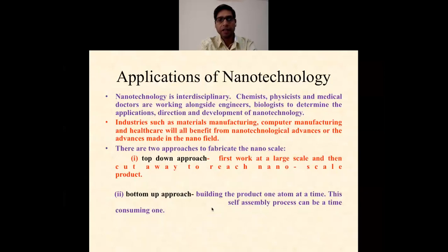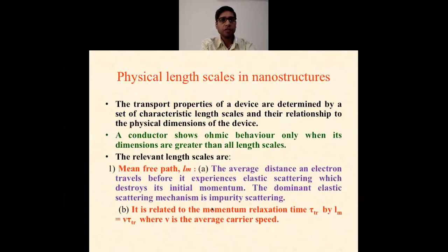Now, physical length scales. The transport properties of a device are determined by a set of characteristic lengths and their relationship to the physical dimensions of the device. These are the length scales below which the material shows nano behavior. A conductor shows ohmic behavior when its dimensions are greater than all length scales. There are four length scales. Number one: mean free path, basically the average distance an electron travels before it experiences elastic scattering, which destroys its initial momentum. The dominant elastic scattering mechanism is impurity scattering. It is related to the momentum relaxation time tau_tr by l_m equals v_f tau_tr, where v_f is the average carrier speed.